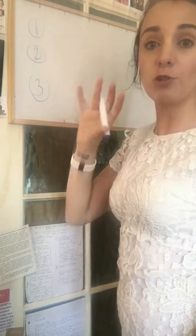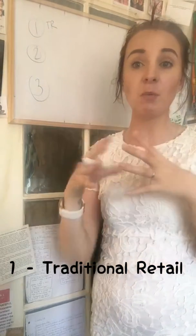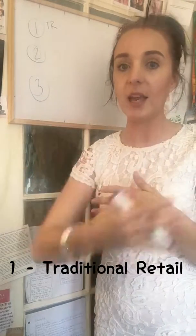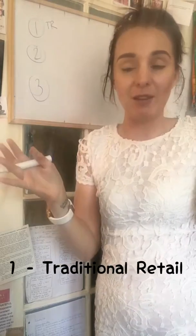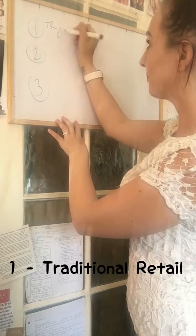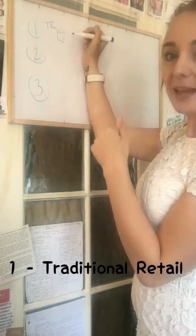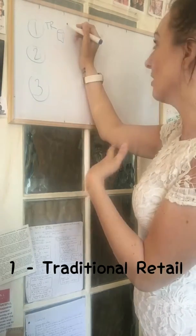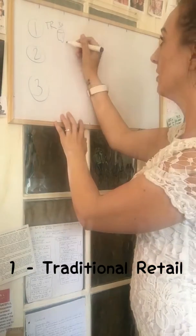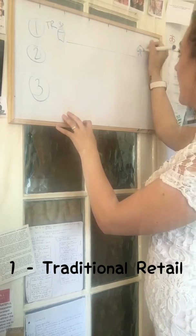The first way that products move is through traditional retail — let's call that TR. Traditional retail is probably what most people have the most experience with; it's definitely how I used to buy all of my goods and products. To explain how traditional retail works, let's use an example: a bottle of shampoo that costs pence to make — say three pence — goes on a massive production line.